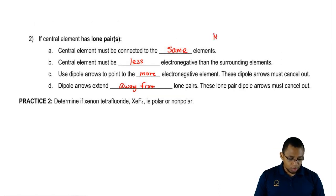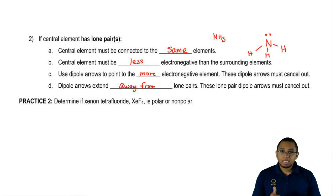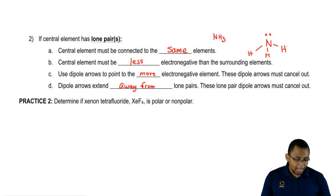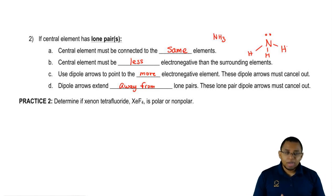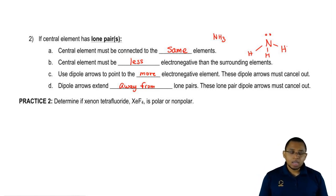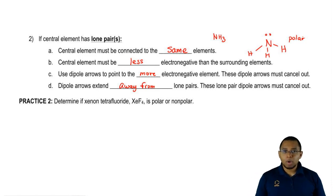Let's look at an example together. Let's say we have to draw NH3. NH3 is nitrogen in the center with the hydrogens connected to it. Our central element has lone pairs so we use the rules. The central element is connected to the same elements, which it is, but it breaks rule 2B — the central element is more electronegative. Since it breaks rule 2B, this compound is automatically polar.